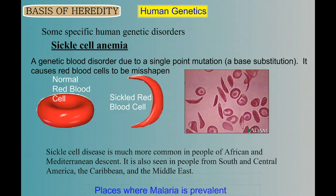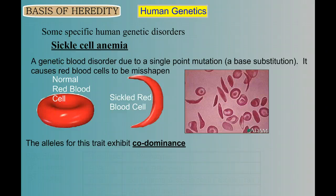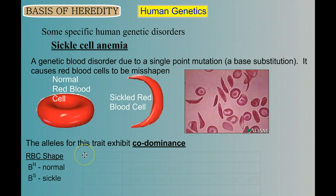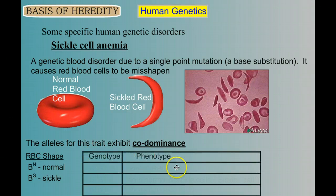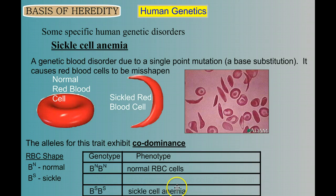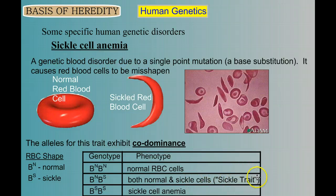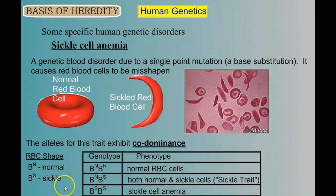Another interesting thing about sickle cell anemia is that it's a trait that exhibits codominance. When doing genetic crosses, we build a key: RBC (red blood cell shape) comes in two alleles — normal and sickle. If you get two normal genes, you have normal red blood cells. If you get two sickle genes, you have sickle cell anemia. But if you get one normal gene and one sickle gene, you have both normal and sickle cells — we call that sickle trait. These people seem to do pretty well; they're not sick and don't have as many painful episodes. And as mentioned before, it happens to be a good defense against malaria, hence a higher incidence of the sickle allele in areas where malaria is more prevalent.